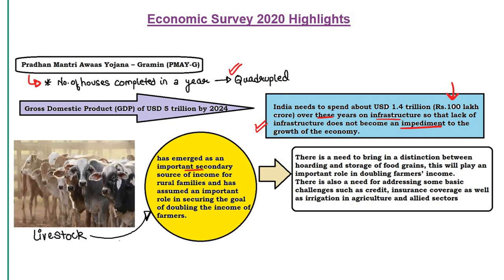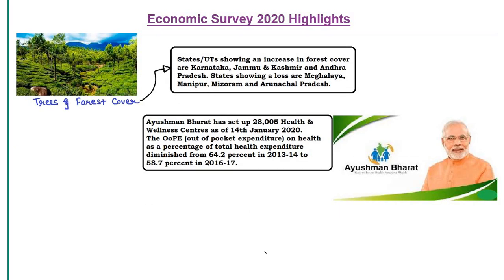Livestock has emerged as an important secondary source of income for rural families. There is a need to distinguish between hoarding and storage of food grains — hoarding artificially reduces supply to raise prices and must be eliminated so farmer income is doubled. Regarding forest cover: states like Karnataka, Jammu & Kashmir, and Andhra Pradesh have shown an increase, while states showing loss of forest cover are Meghalaya, Manipur, Mizoram, and Arunachal Pradesh — underline these, they are important for prelims.